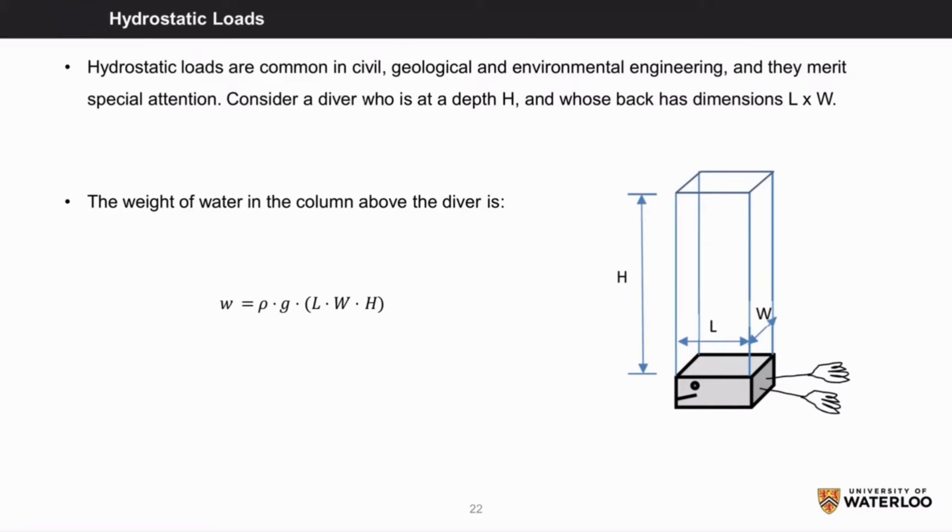Consider a diver who is at a depth h and whose back has dimensions l by w. The weight of the water in the column above the diver is the mass density of the water times the acceleration due to gravity times the volume of the water, or rho times g times l times w times h.